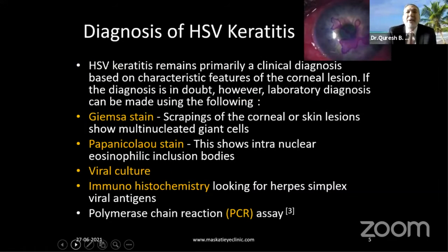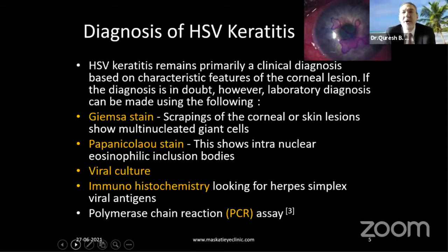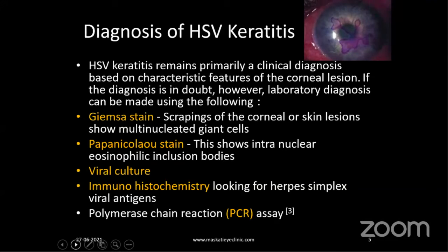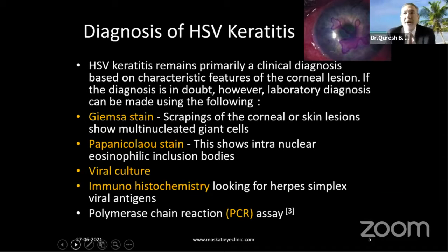How do we diagnose this? We don't need to do PCR for all these patients. Primarily it's a clinical diagnosis. You can stain with fluorescein, stain with rose bengal, and you get classical features. If you scrape, you can do a Giemsa scan, a Pap smear, viral cultures, or immunohistochemistry, depending on what kind of practice or institute you are in. And if you want to write a paper on the subject, you can do all these other tests as well.